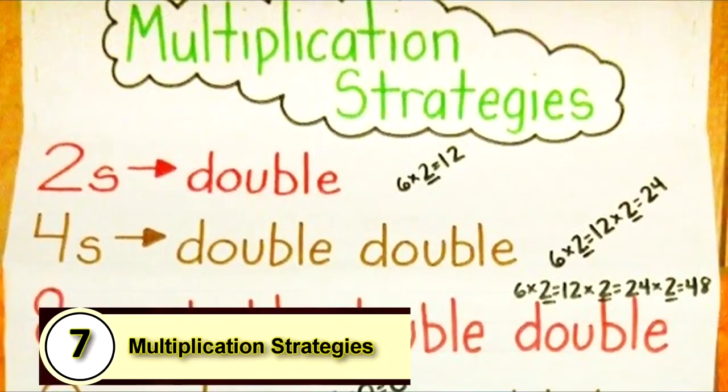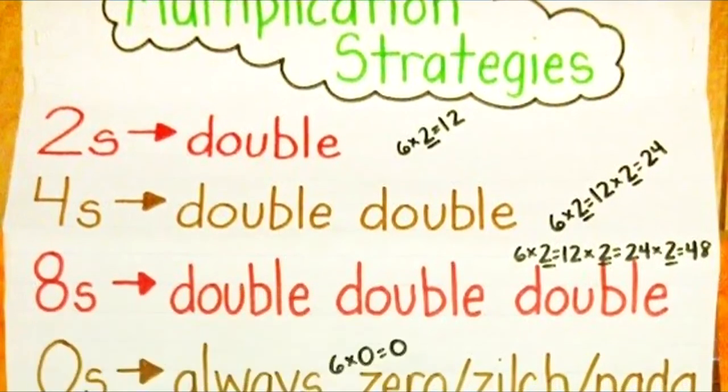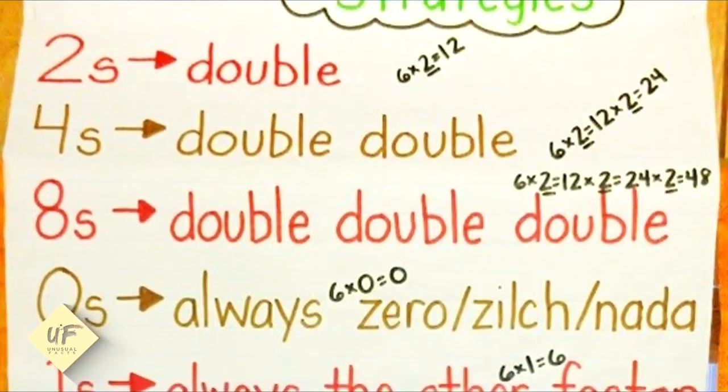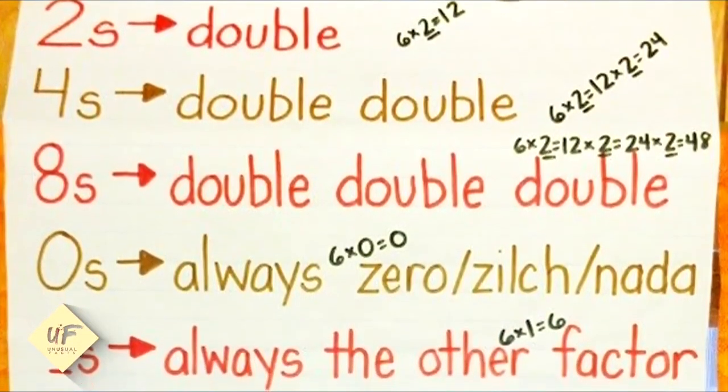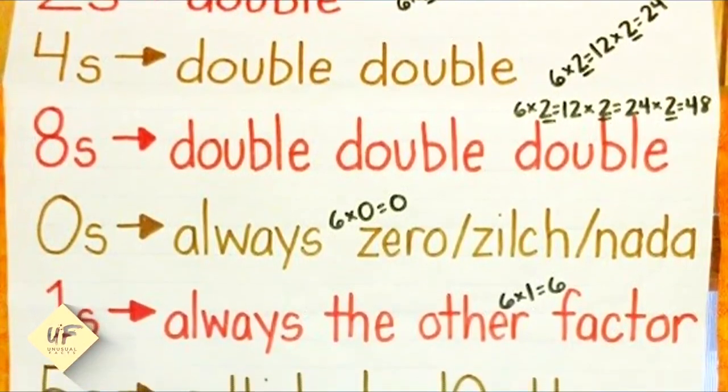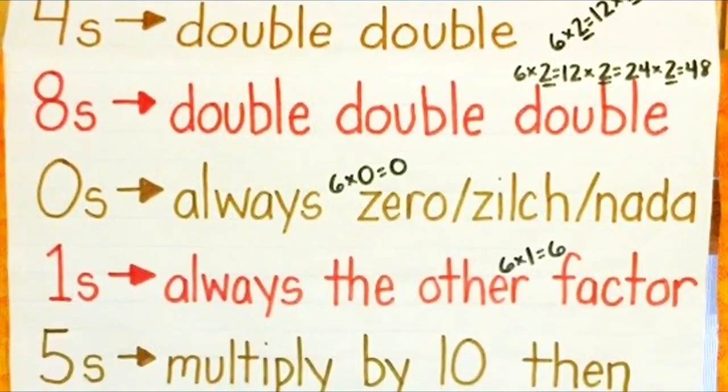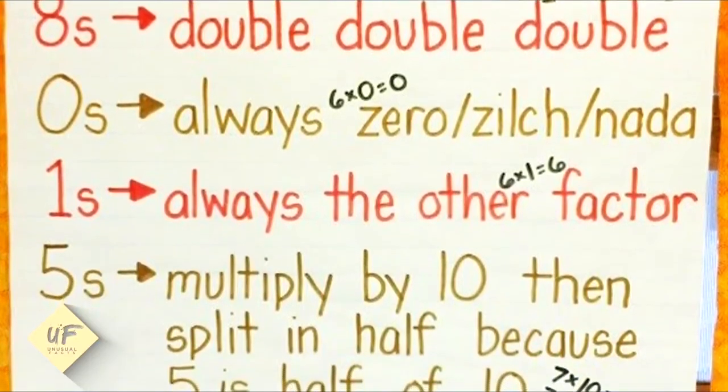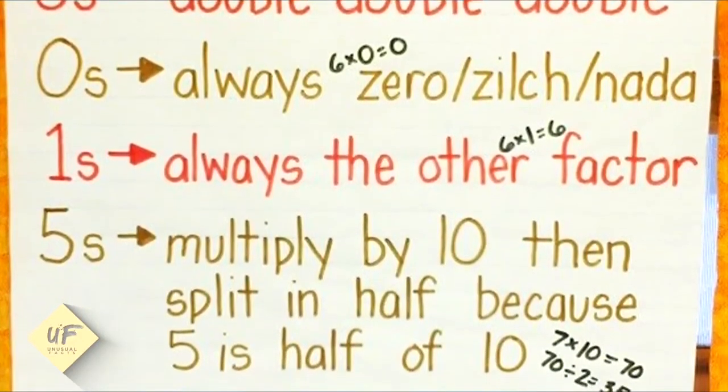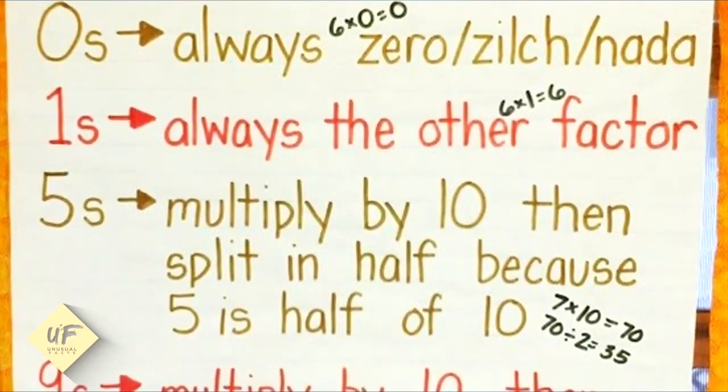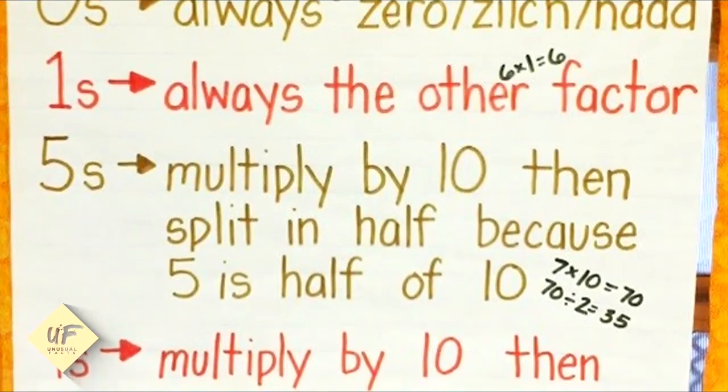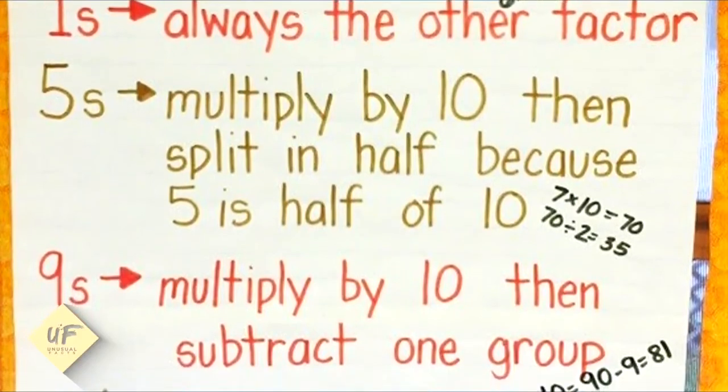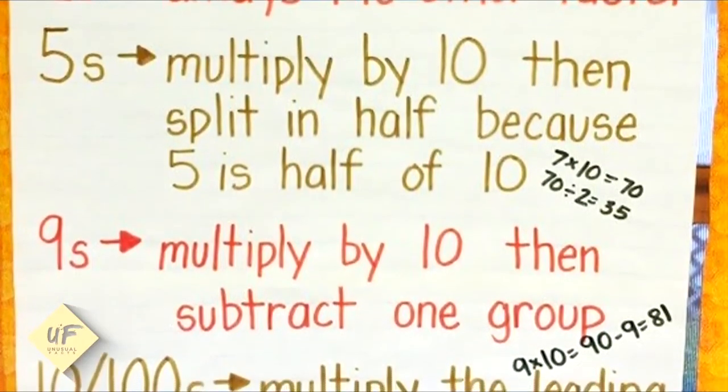Number seven: multiplication strategies. Twos: double. So six times two is 12. Fours: double, double. Six times two equals 12 times two equals 24. Eights: double, double, double. Six times two equals 12 times two equals 24 times two equals 48. Zeros always equal zero, so six times zero is zero. Ones always equal the other factor, so six times one is six.